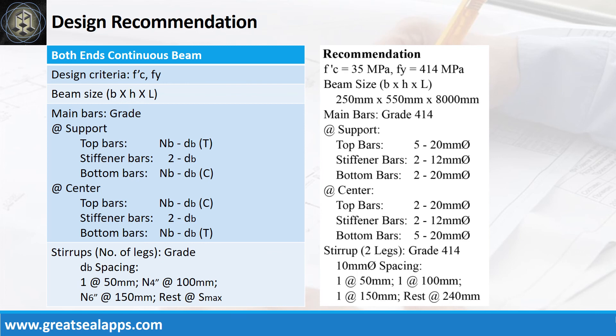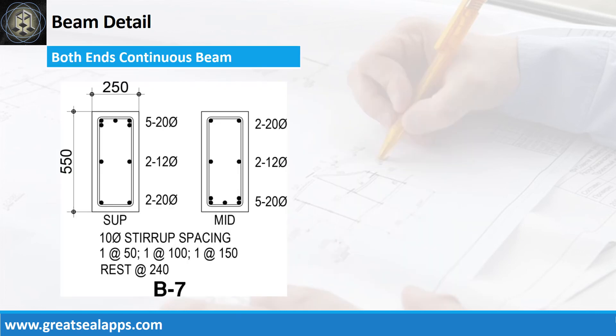Stirrup spacing: one at 100 mm, one at 150 mm, rest at 240 mm. Thank you for watching.